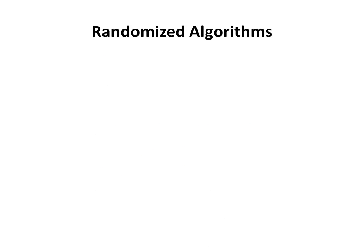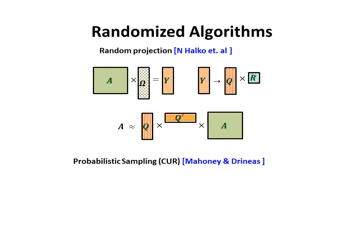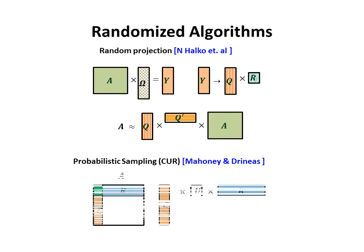Currently, randomized algorithms represent state-of-the-art in extracting structures from very large matrices. Prominent examples include random projection, as well as probabilistic sampling such as CUR matrix factorization.